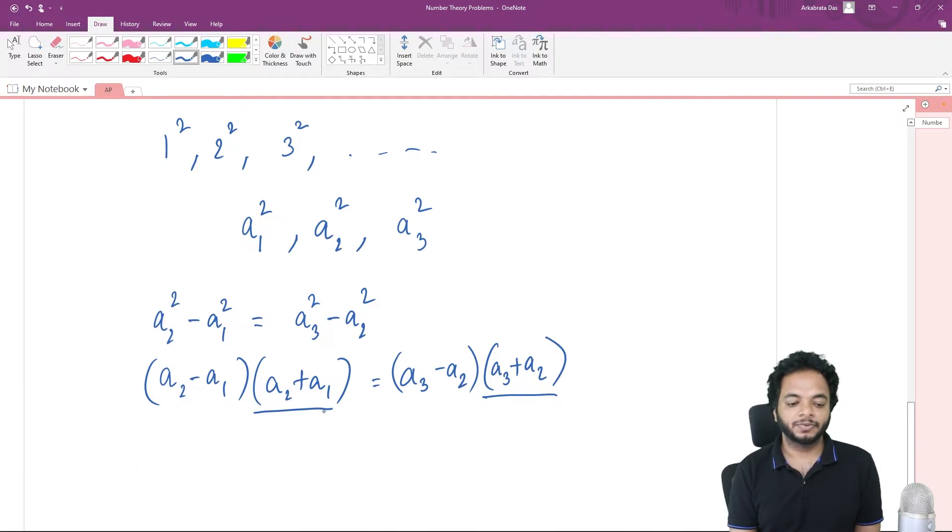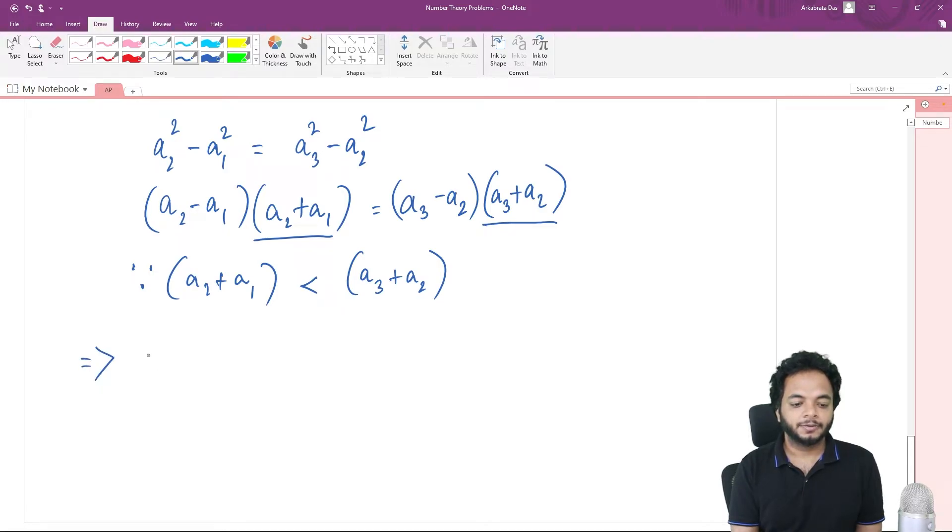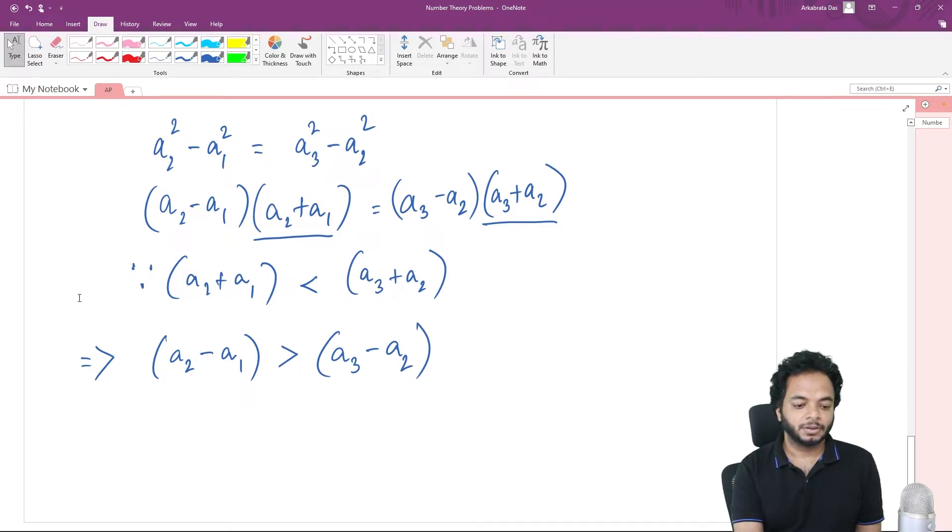Since a2 plus a1 is strictly less than a3 plus a2, for the equality to happen, the other part should adjust. So you get a2 minus a1 should be greater than a3 minus a2.